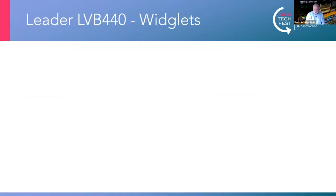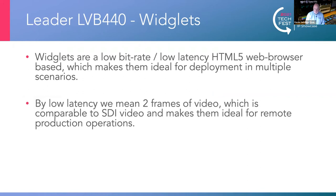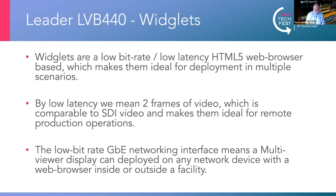This changes the way we can look at monitoring and analysing IP networks and production facilities. With the 440, we've also added another tool called the widgets. These are a low bit rate, low latency, HTML5 web browser based tool, which means you can monitor the video streams remotely. By low latency I mean two frames of video, which is now comparable to SDI video — making them ideal for remote production operations. The low bit rate gigabit network interface means multi-viewer displays can be deployed on any network device with a web browser, inside or outside of a facility.